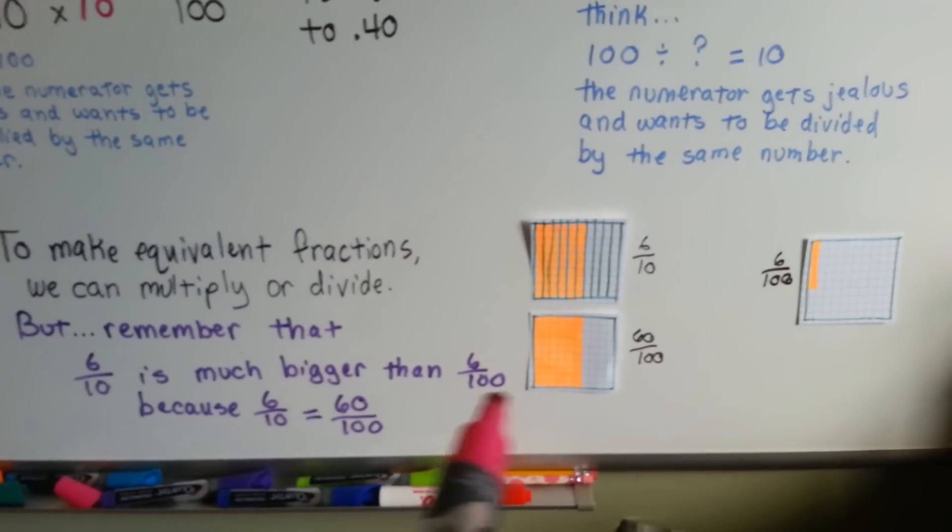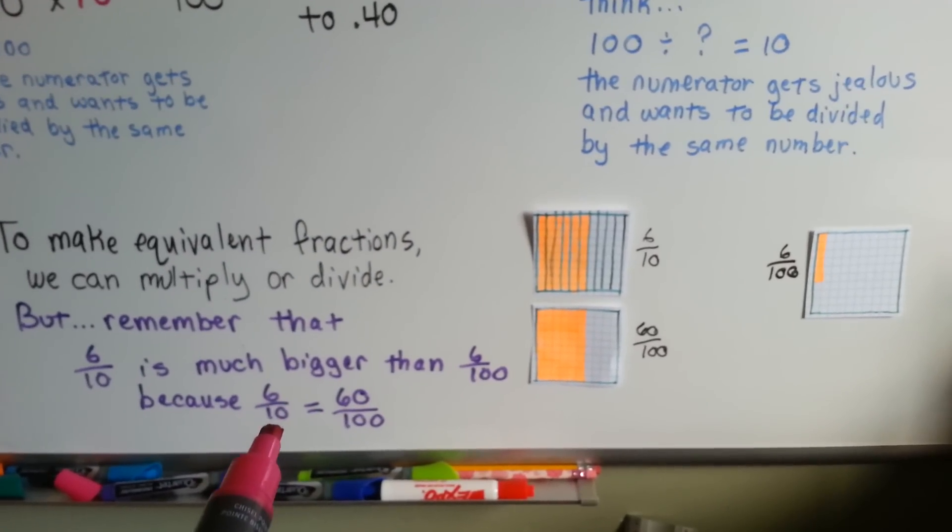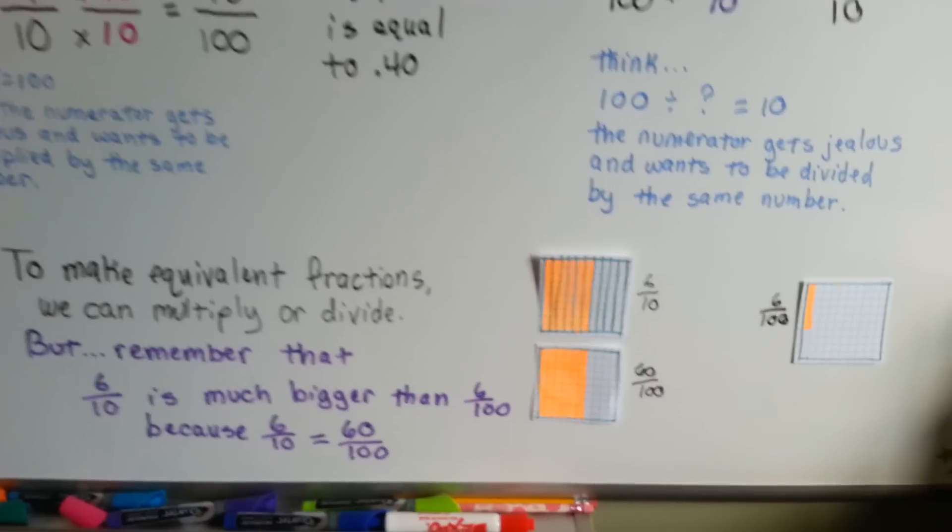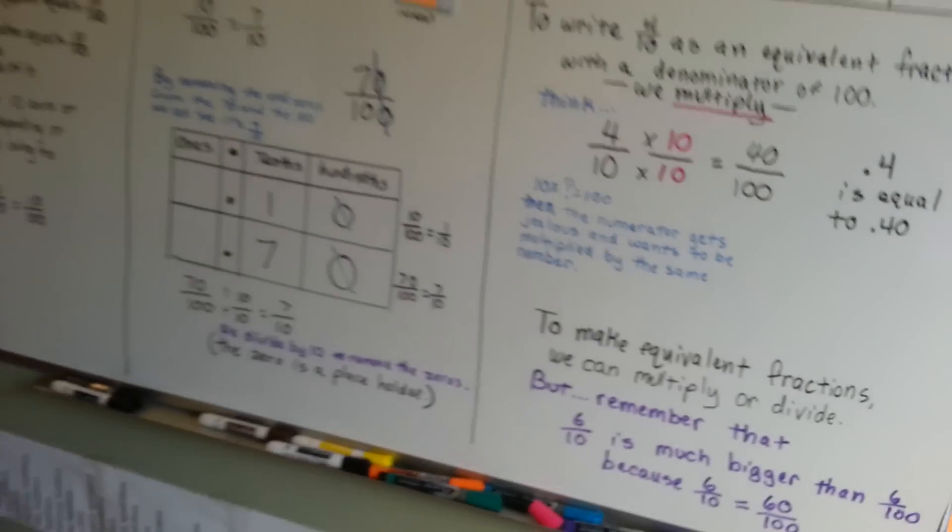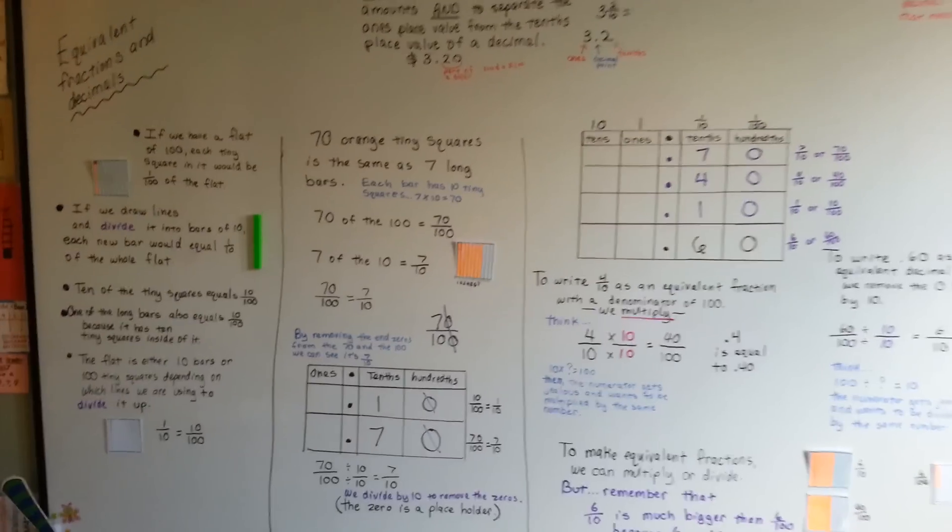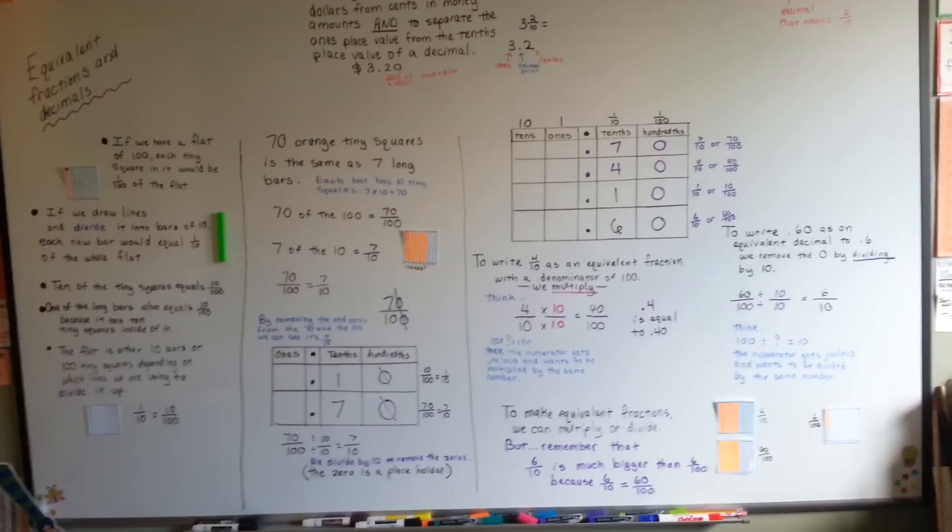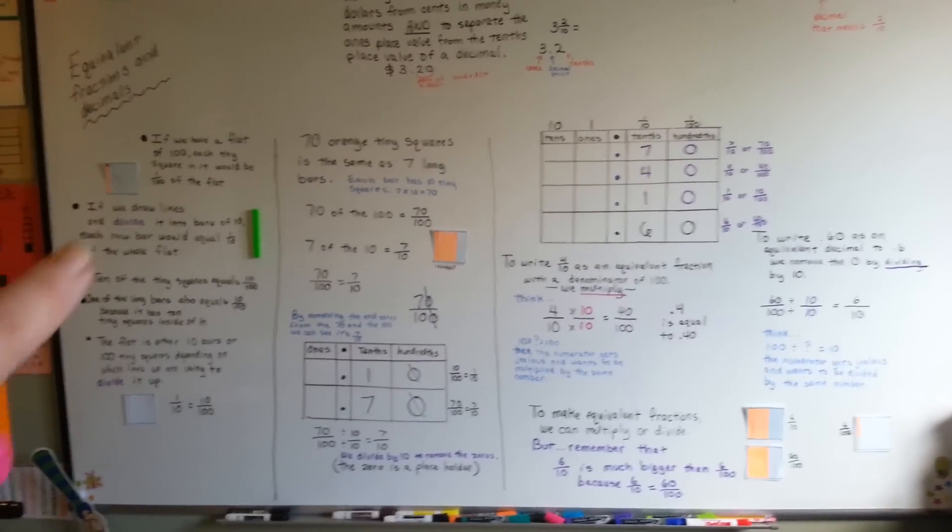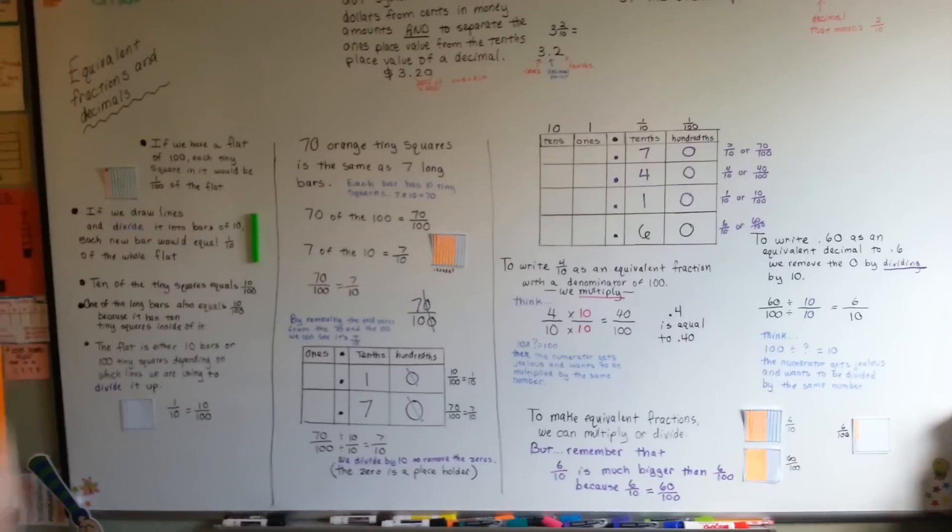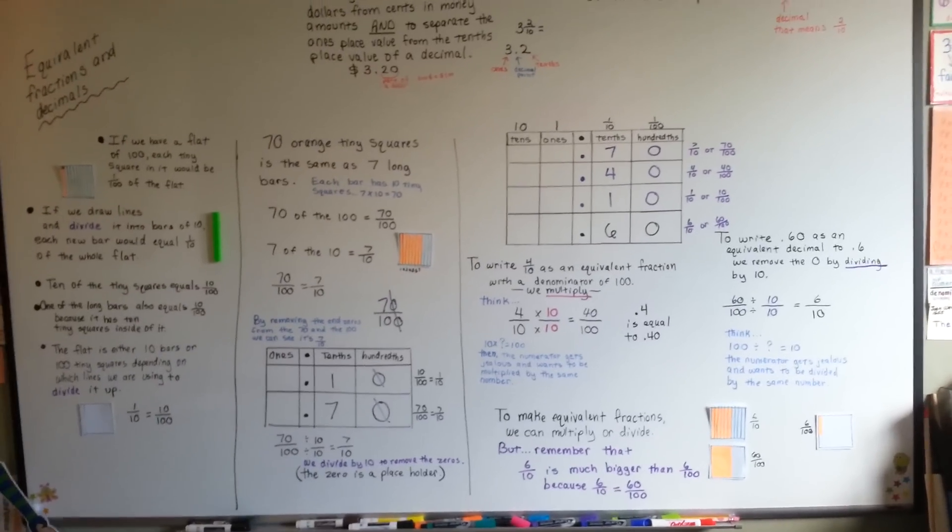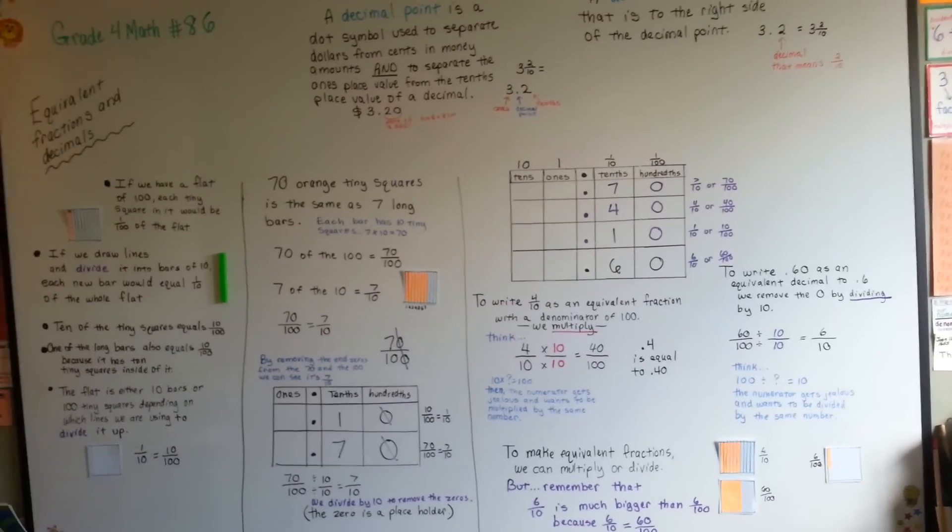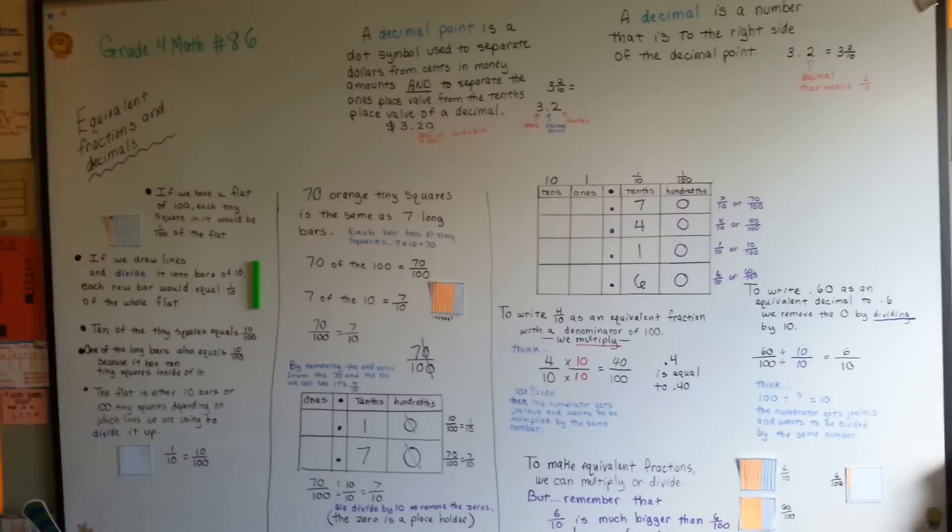So, in fractions, the smaller the denominator, the bigger the number. Isn't that weird? One over two is half of something. Would you rather have half of something, or a hundredth of something? If you had a hundredth of something, you'd just have one tiny little hundred piece like that. So just remember, the smaller the denominator, the bigger the fraction.